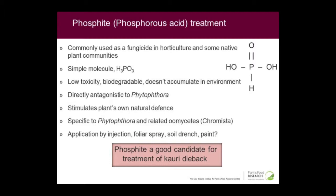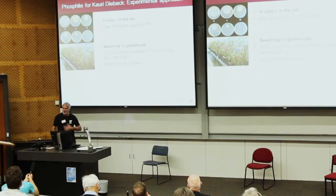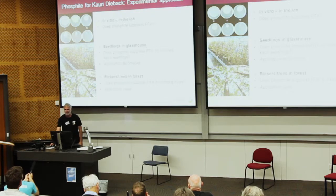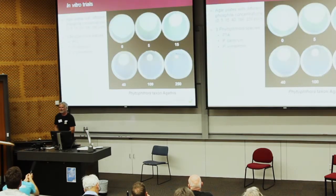So obviously it's a good candidate for kauri dieback. Our experimental approach was to test this properly — we didn't want to go charging off into the bush and start treating trees without doing any preliminary experimental work. So we started off with some lab studies, then moved into seedlings in the glasshouse that had been inoculated with the PTA, and then moved into stands of forest that were suffering from the PTA. First of all, the lab tests — these were very simple, what we call poison plates. It's a standard system for testing any chemical to see whether it's antagonistic to the pathogen.